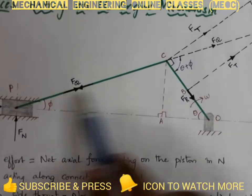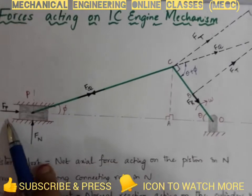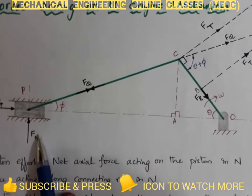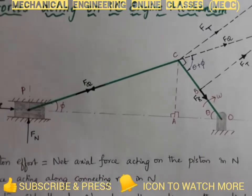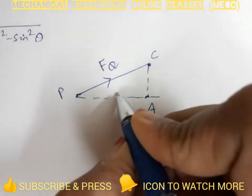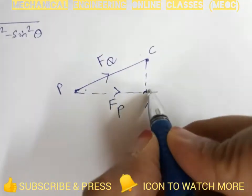In this triangle P, C, and A, fq is along the connecting rod, fp is along the line of stroke, and fn is the side thrust. We are drawing the force polygon: this is fq, this is fp, and here is fn. These two are perpendicular.